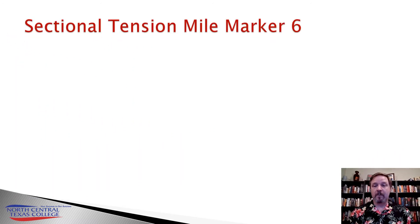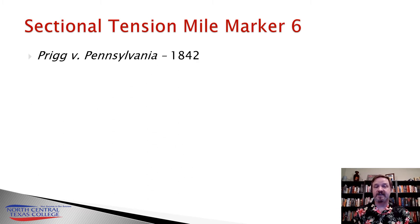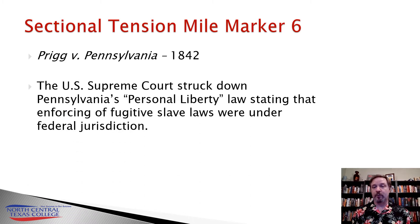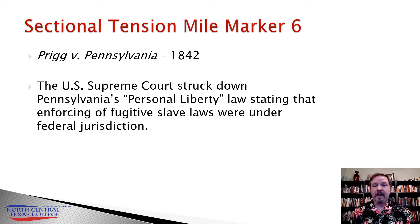The next sectional tension mile marker, number six, is another court case — this time at the U.S. Supreme Court: Prigg v. Pennsylvania of 1842. Initially, Southerners thought this was a great victory for them. Pennsylvania had a personal liberty law similar to what was happening in Massachusetts, declaring escaped slaves who entered their state to be free. The U.S. Supreme Court struck this law down, ruling that the Fugitive Slave Act of 1793 is a federal law and falls under federal jurisdiction.